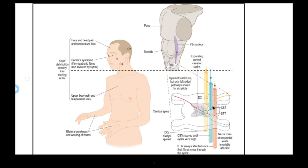After the spinothalamic tract, the corticospinal tract may become involved, though this happens much later. In that case, patients can develop spastic paraparesis or tetraparesis. The dorsal columns, being far from the site of the syrinx, are typically spared.